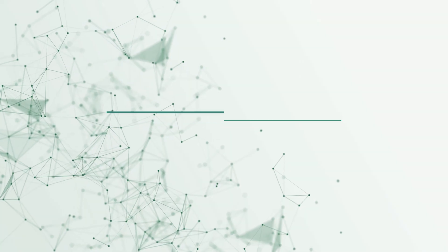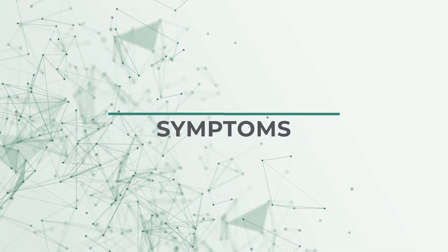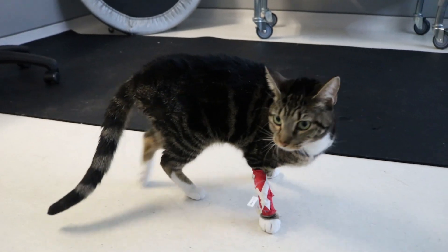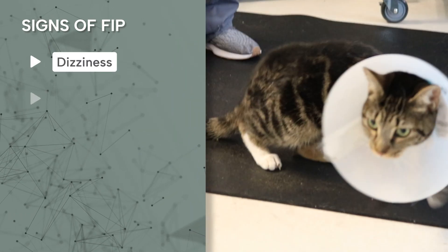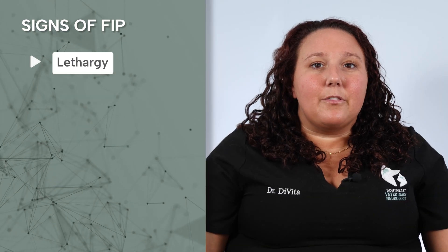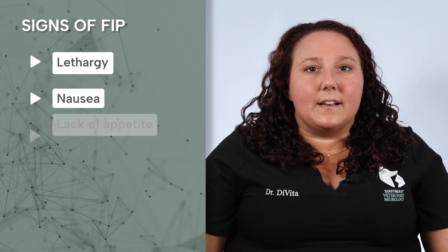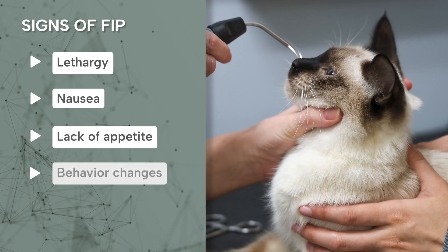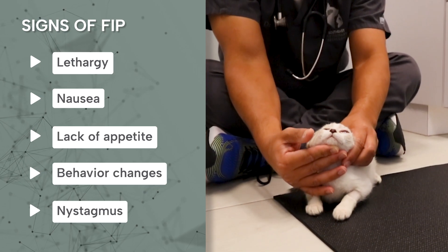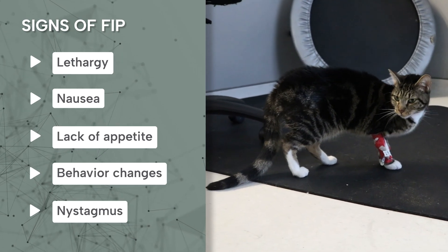FIP can affect many body systems; obviously the neurologic system is one of them, and it will most commonly affect the brain. When FIP affects the brain, it can cause a number of different symptoms. Some of the most common things we see are dizziness, loss of balance, loss of vision, sometimes seizures, and oftentimes the cats feel very lethargic, sometimes nauseated or inappetent. Sometimes we'll even see nystagmus, or abnormal eye movements — all pointing to a problem affecting different parts of the brain.